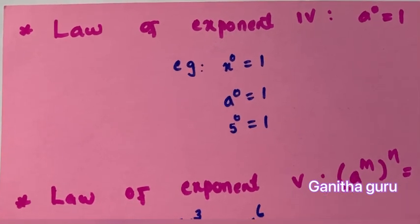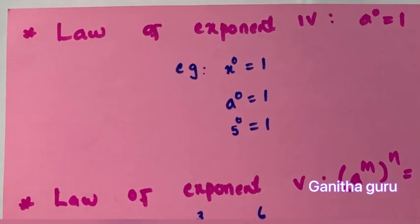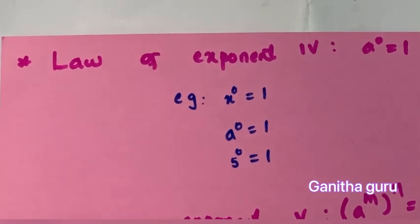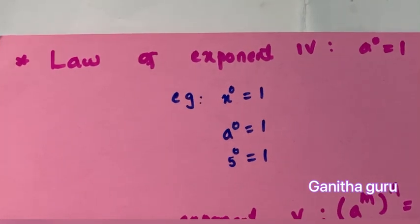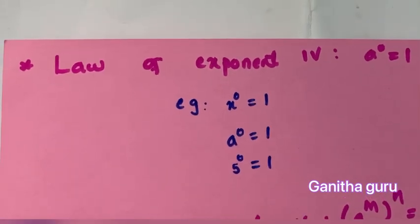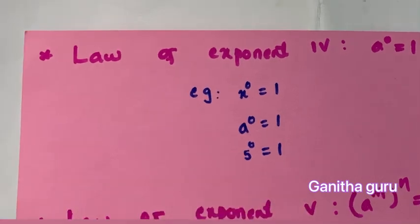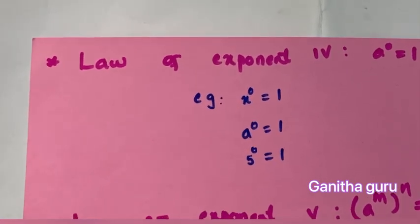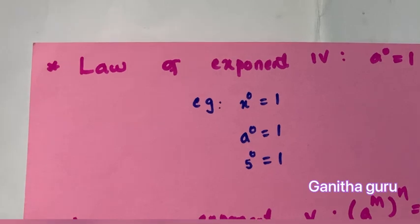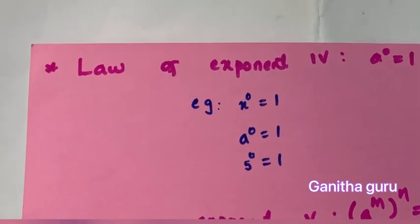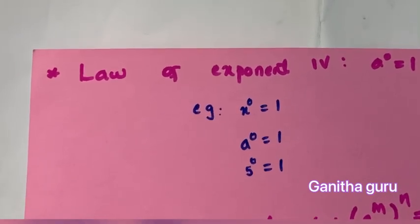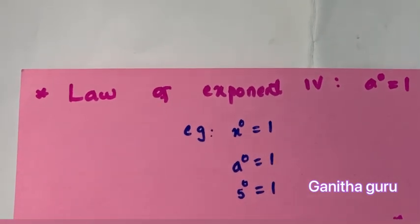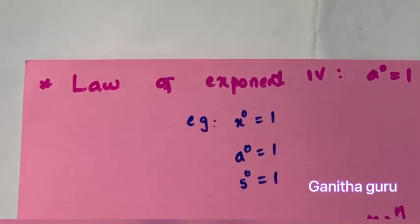Any number raised to 0 is equal to 1. So x raised to 0, 5 raised to 0, 10 raised to 0, and p raised to 0 — the answer is equal to 1.